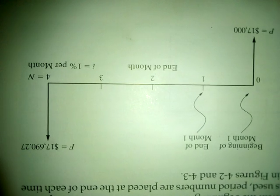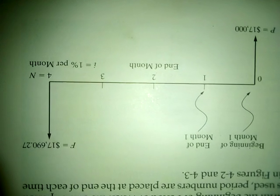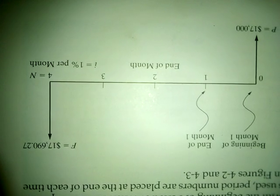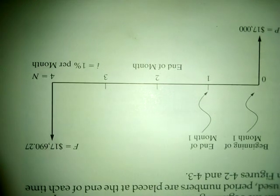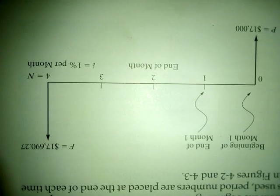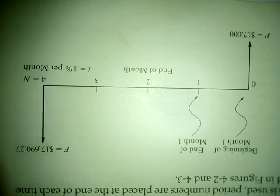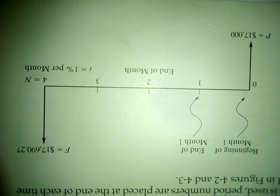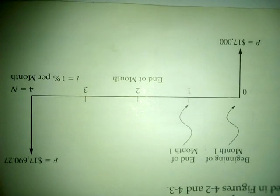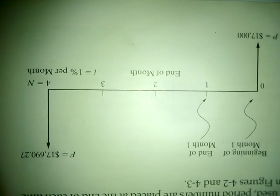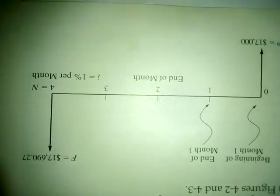The axis shows years one, two, three, four, representing the number of years, and i represents the interest rate. So every time you have an investment — you are spending money — plot it downward. Any time you are receiving money, plot it upward.